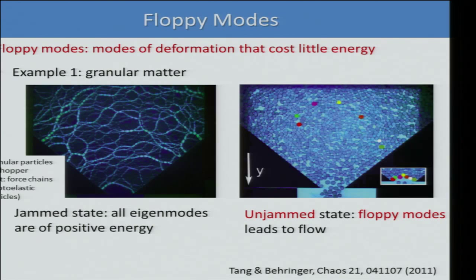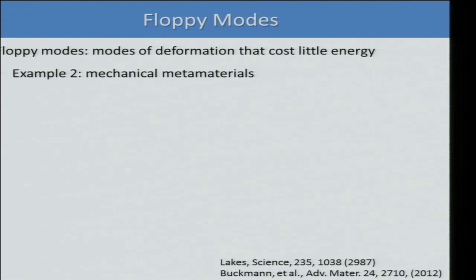This is not limited to soft matter. Next let me show you one example of how we can use floppy modes to make novel materials — mechanical metamaterials — by which we mean novel materials that have exotic properties gained from their structure rather than the composition of the material.